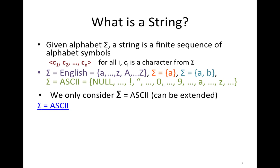For example, here are some examples of some alphabets. There is the English alphabet, which contains the small and capital English letters. There is an alphabet that contains one single symbol, which is A. There is an alphabet that contains two symbols, A and B. And there is the ASCII alphabet, which contains two hundred and fifty-six symbols, starting from null, going all the way to two hundred and fifty-five.